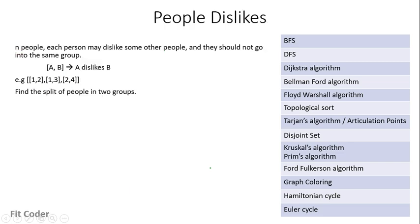The next problem is people dislikes. We are given n people and each person may dislike some other person, and both of them should not go in the same group. If we are given data in the form of A, B it means A dislikes B. We want to split the people into two groups such that people who dislike each other are not in the same group.